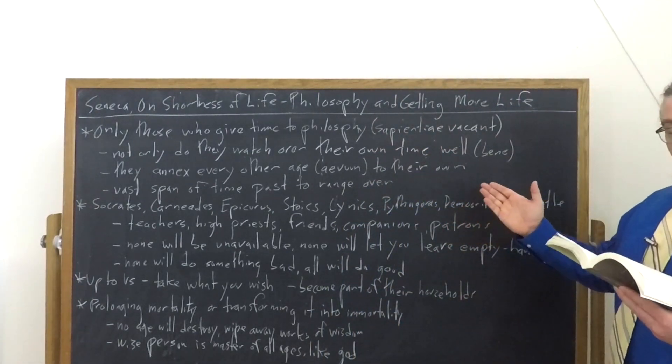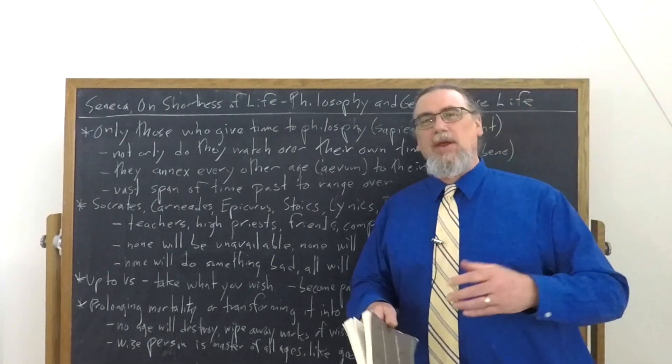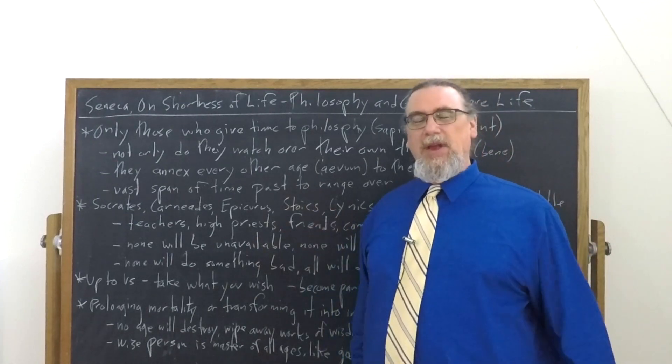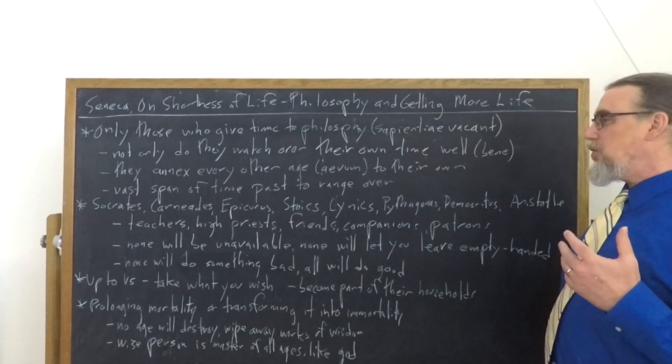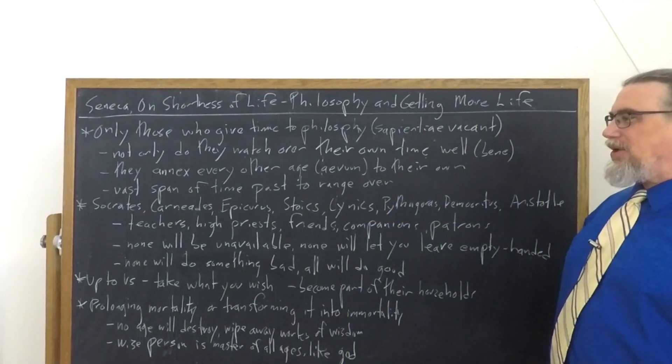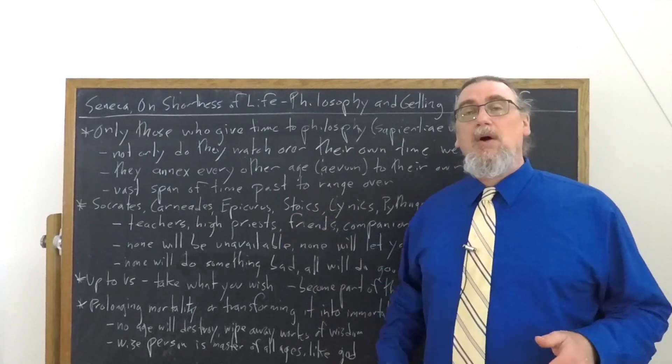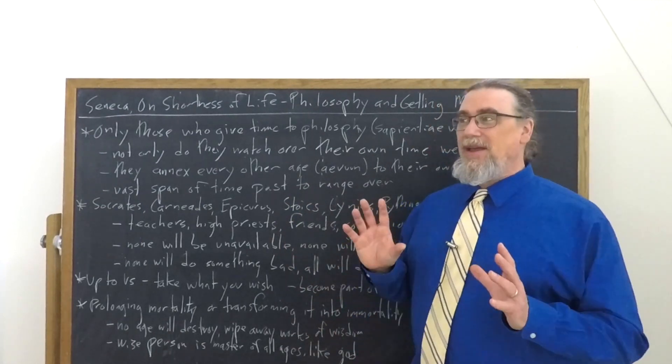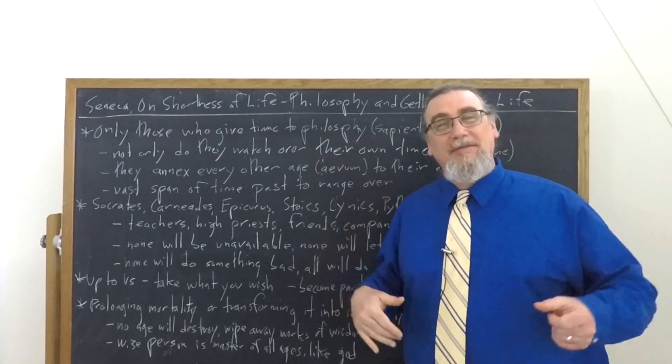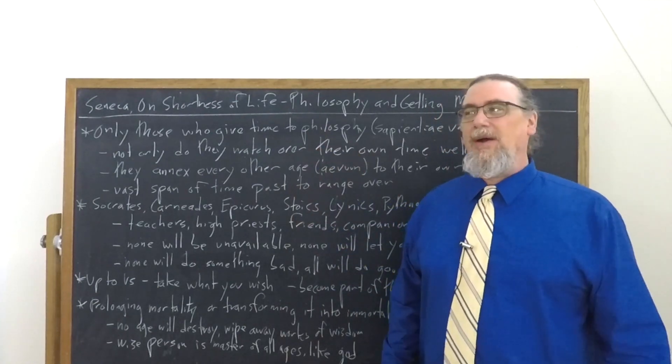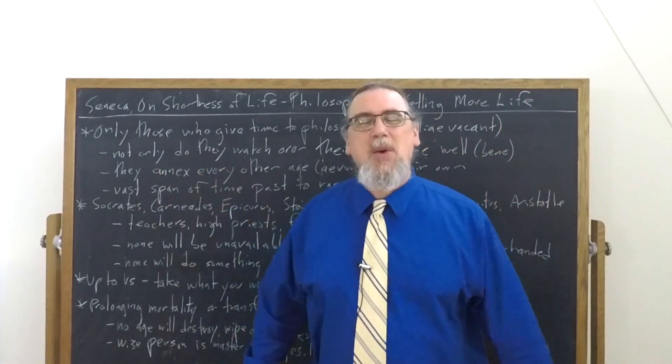He tells us that they can be our companions. And they can even be our patrons. In Roman society, the patron-client relationship was quite important. We can associate ourselves with them. And this leads to another really interesting idea that we're going to talk about in a minute. But before that, let's see some of the other things he says. He tells us none of them will be unavailable to us. So unlike going to somebody's house and knocking on the door, can so-and-so come out, I want to have a conversation. I'm too busy, or they're sick or something like that.